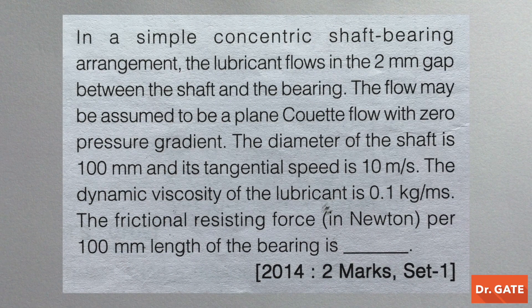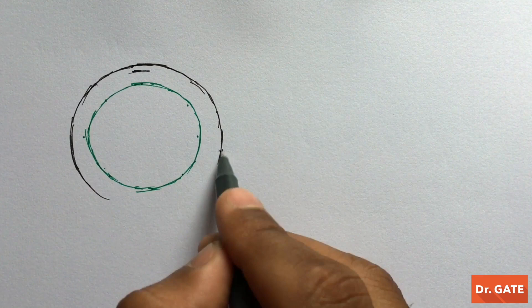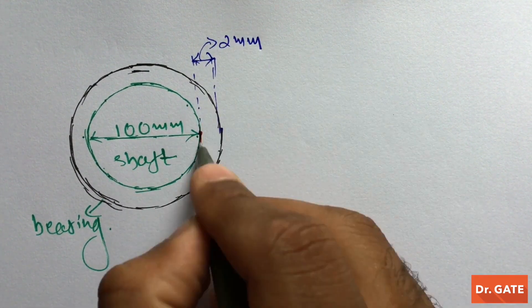Now come to another question. In a simple concentric shaft-bearing arrangement, the lubricant flows in the 2 mm gap between the shaft and the bearing. The flow may be assumed to be a plain Couette flow with zero pressure gradient. The diameter of the shaft is 100 mm and its tangential speed is 10 m/s. The dynamic viscosity of the lubricant is 0.1 kg/(m·s). The frictional resisting force in Newtons per 100 mm length of the bearing is to be found.